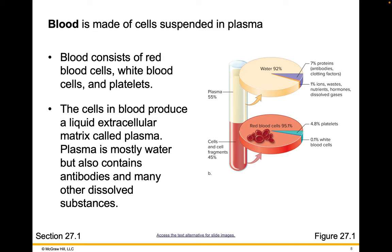Blood is made up of cells suspended in a liquid called plasma. Blood consists of red blood cells, white blood cells, and platelets. The cells in the blood produce a liquid extracellular matrix called plasma. If you put blood in a centrifuge to separate the cells from the liquid, it's about 55% liquid plasma on top.